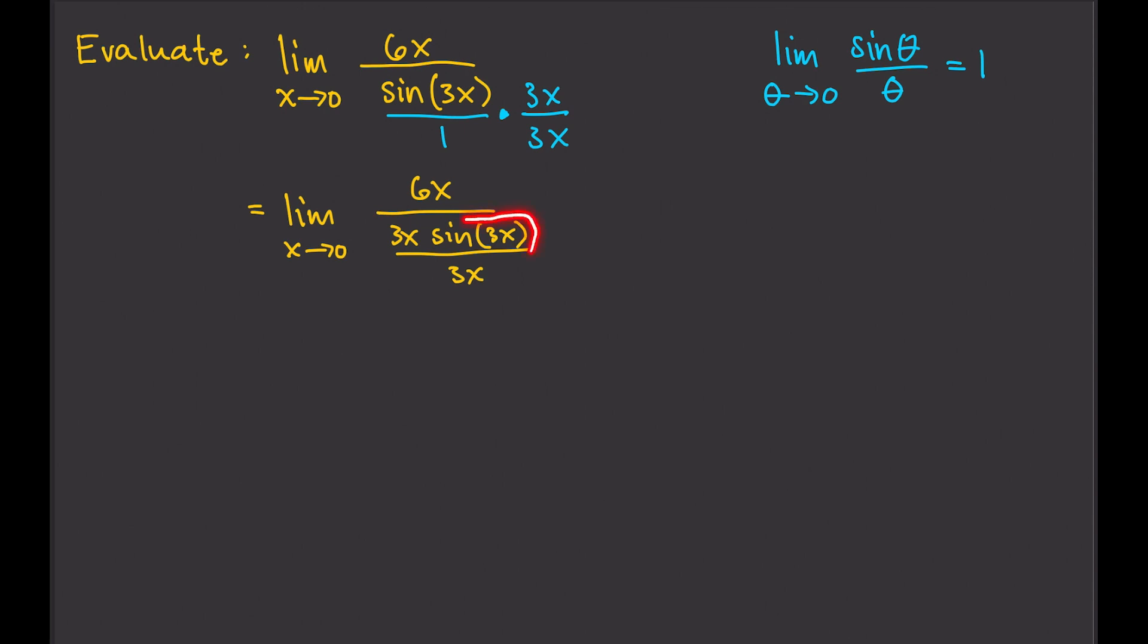This is what we want, because that looks like this. So now, we can separate that. Let's write the limit as, limit as x approaches 0 of 6x over 3x times sine of 3x over 3x. Then, what can we do? We can cancel out x and x here. 6 divided by 3 is 2. So, that's just going to be 2 there.